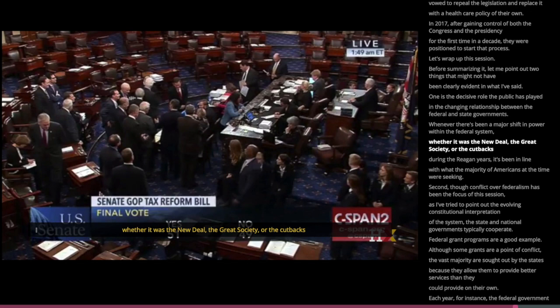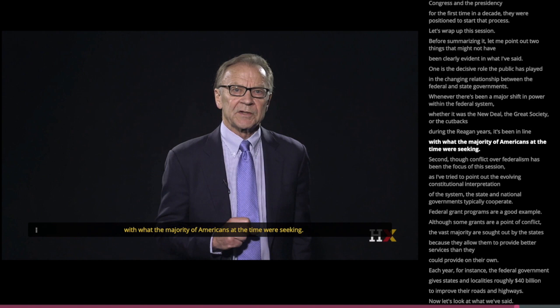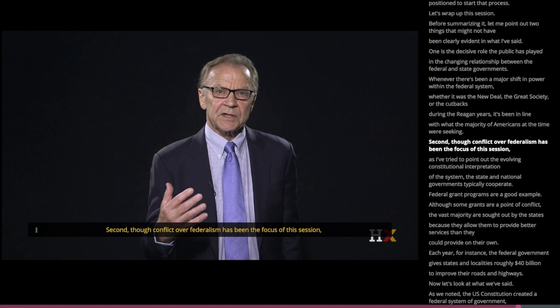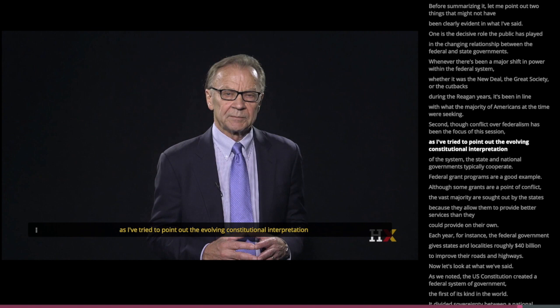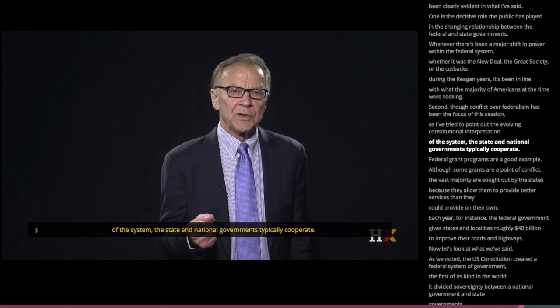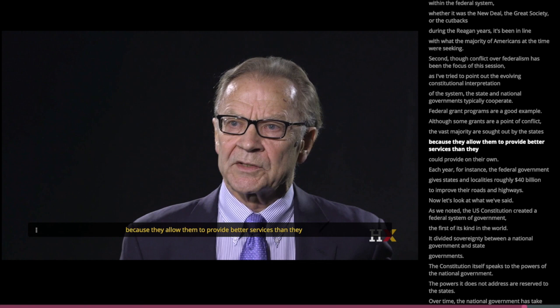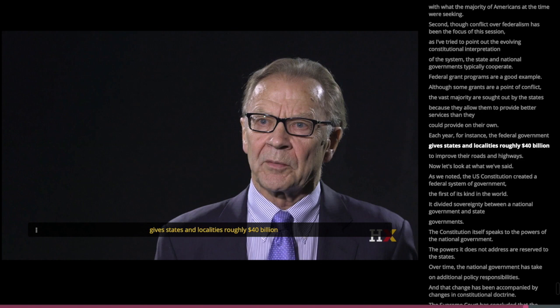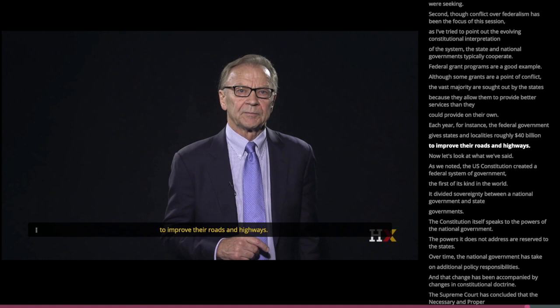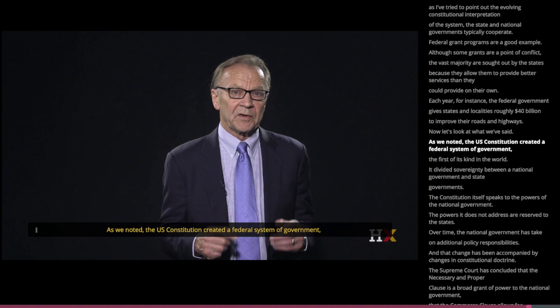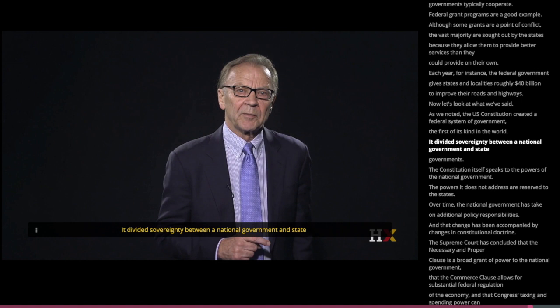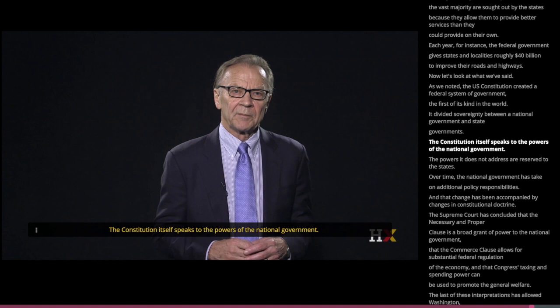Let's wrap up this session. Two things may not have been clearly evident. One is the decisive role the public has played in the changing relationship between federal and state governments — whenever there has been a major shift in power within the federal system, whether the New Deal, the Great Society, or the cutbacks during the Reagan years, it has been in line with what a majority of Americans at the time were seeking. Second, though conflict over federalism has been the focus of this session, the state and national governments typically cooperate. Federal grant programs are a good example — the vast majority of grants are sought out by the states because they allow them to provide better services than they could on their own. Each year, for instance, the federal government gives states and localities roughly $40 billion to improve their roads and highways.